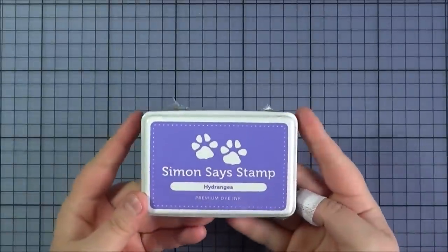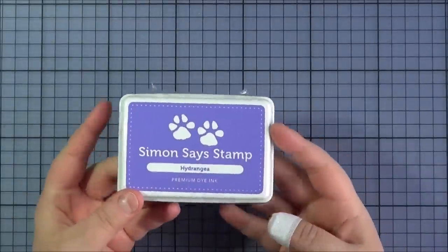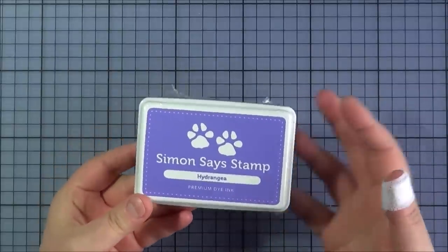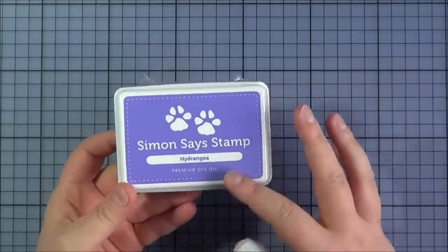Next up I got the Hydrainger ink from Simon Says Stamp and I think it's a really lovely purple color. I really like purple in general so I already have the lavender color and I thought this would be quite nice as well.